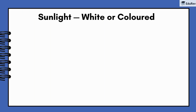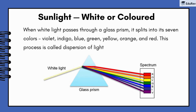Did you know that white light from the sun is actually made up of seven different colors? When white light passes through a glass prism, it splits into its seven colors: violet, indigo, blue, green, yellow, orange, and red. This process is called dispersion of light, and it's why we see rainbows. Each color bends at a different angle when it passes through the prism, spreading out into a beautiful spectrum.